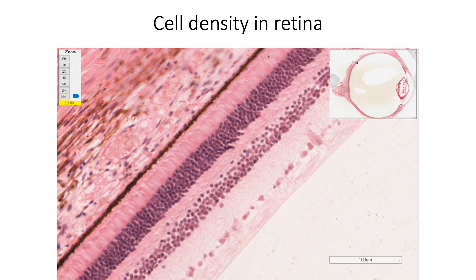Due to convergence of many photoreceptor cells onto one bipolar cell, and many bipolar cells onto one ganglion cell, the cell density is maximum in the outer nuclear layer, which contains the nuclei of rods and cones, compared to the inner nuclear layer containing bipolar neurons, and the fewest cells are found in the ganglion cell layer.